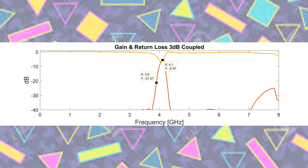The coupled bandpass filter was designed with errors. Due to these flaws, the results are skewed, though the fabrication of this filter was fine. This particular filter was fabricated three times and it yielded the same S11 and S21 values each time.